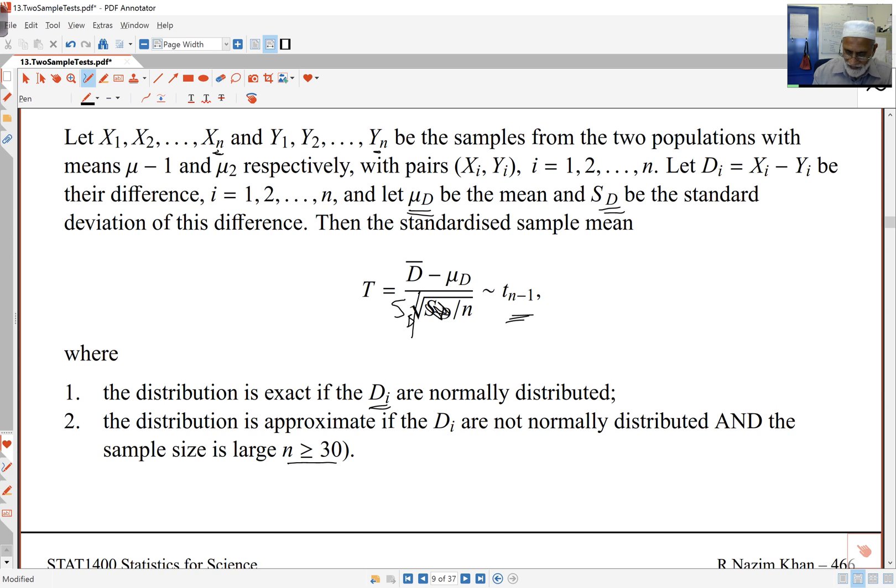Now, here, the distribution is exact if my di's are normal. And if they are normal, then my sample size needs to be large. In this case, the distribution here is only approximate. So be careful. For small sample sizes, I need normality of the differences. The di's have to be normal. But for large sample sizes, it doesn't matter, because of central limit theorem. This standardized t statistic is still a t n minus 1, approximately.